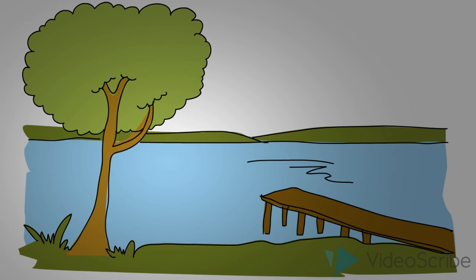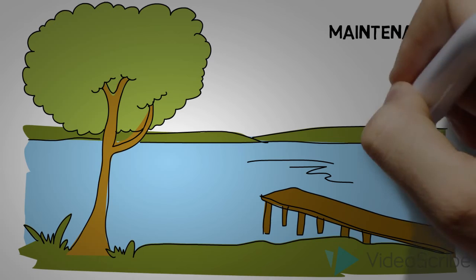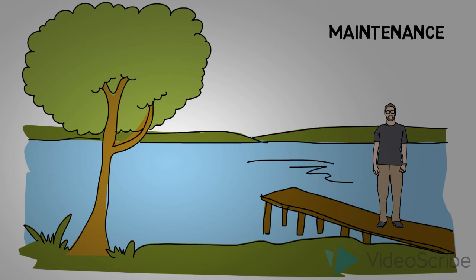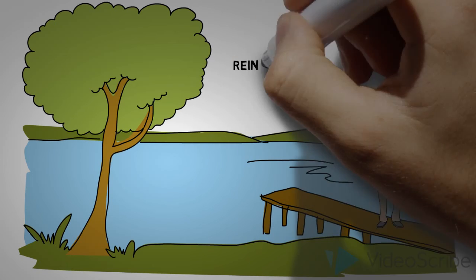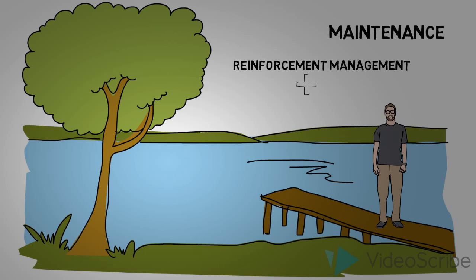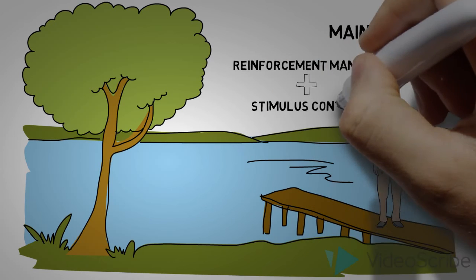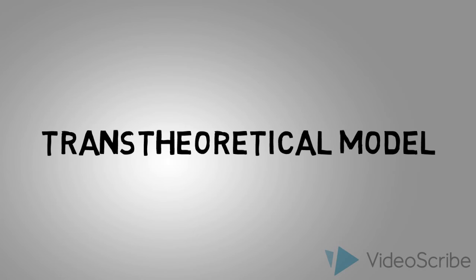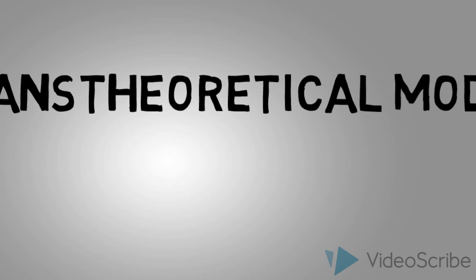Finally, Billy transitions into the maintenance stage, where he must continue to use reinforcement management and stimulus control to make the new behavior a lasting change. Stimulus control is using reminders to encourage the healthy behavior. Billy may begin weighing himself every morning to continue to keep in mind that he is happy with his behavior change and does not want to slip back into his unhealthy habits.